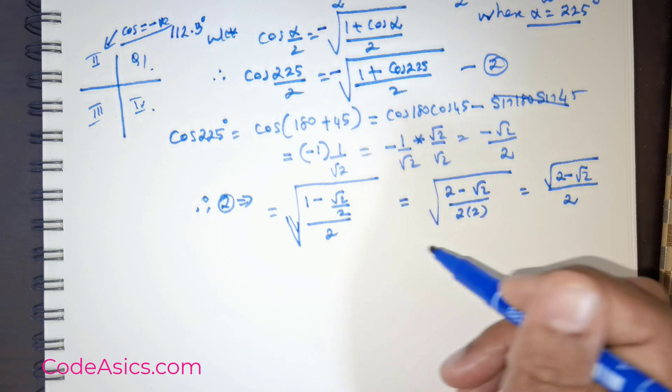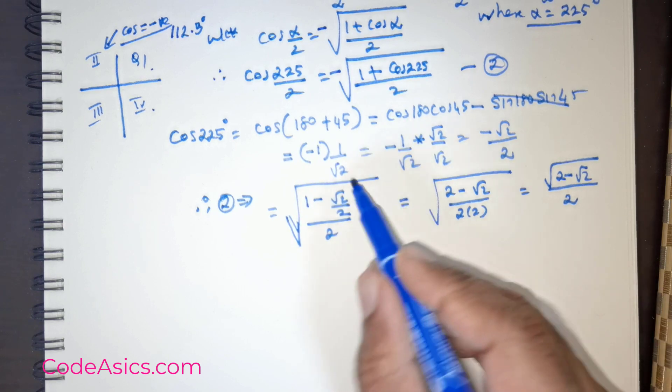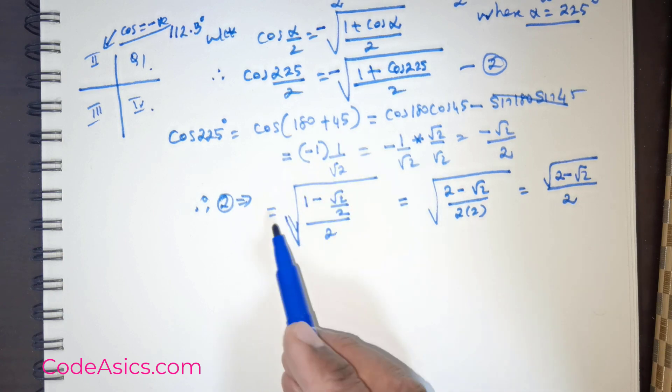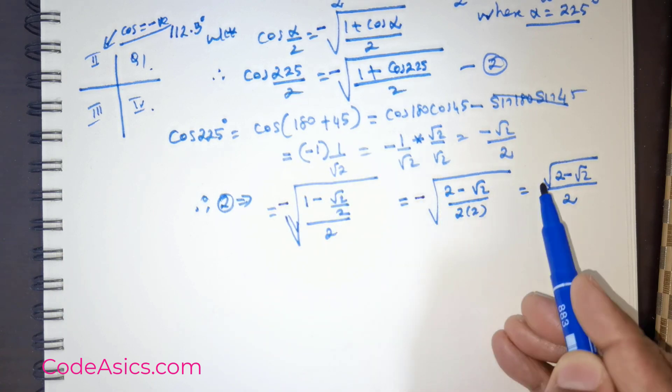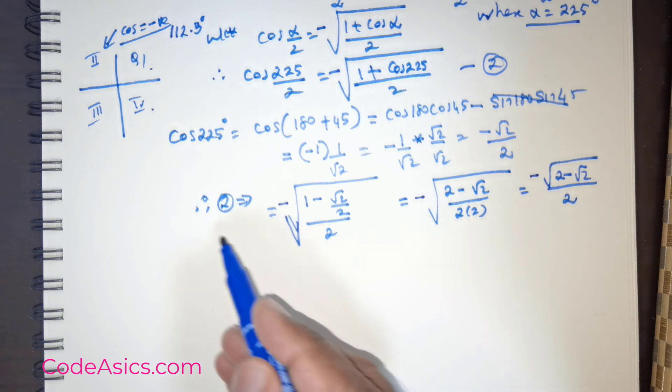It is always better to solve it, get the result, and then decide on the sign. The sign is going to be negative. So this is the final solution.